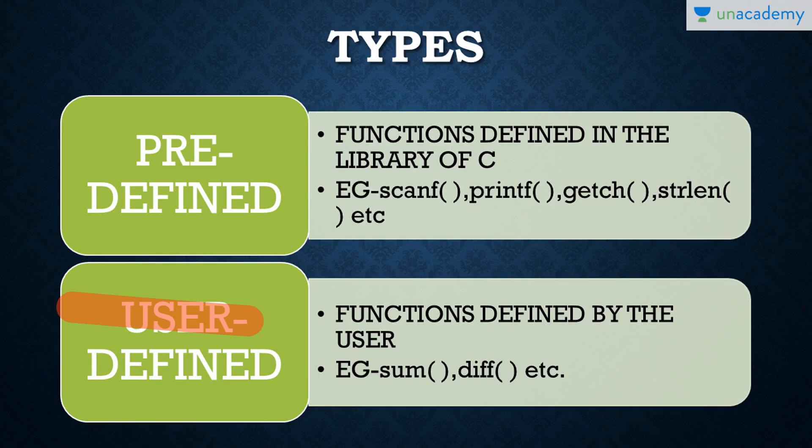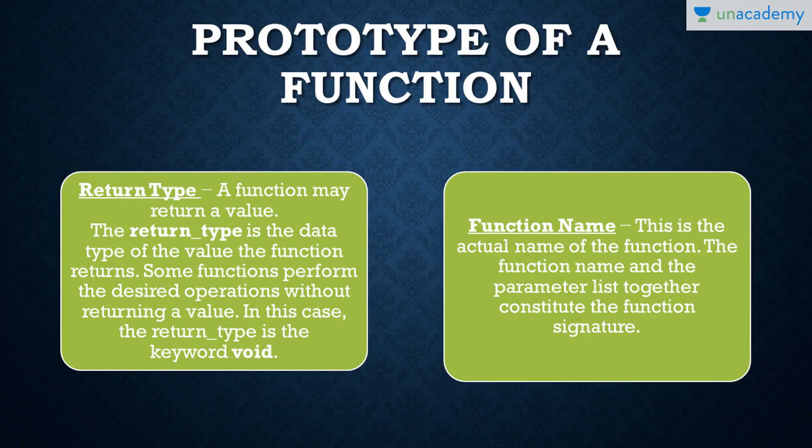What are the types of functions? Functions are of two types: predefined and user-defined. Predefined means those defined in the library by Dennis Ritchie, and user-defined are those we define ourselves. Examples of functions: scanf is a function we use in a single line, but scanf has a definition. Printf, getch, strlen - all these have definitions written by programmers.